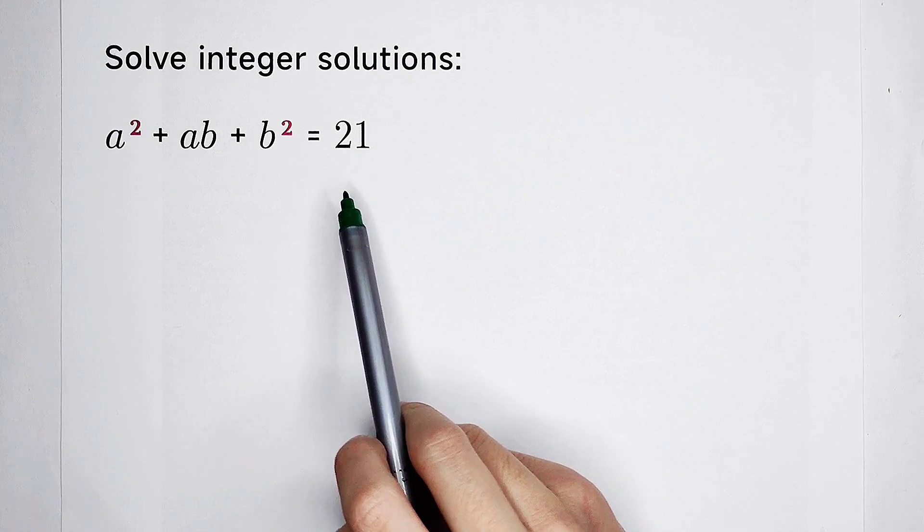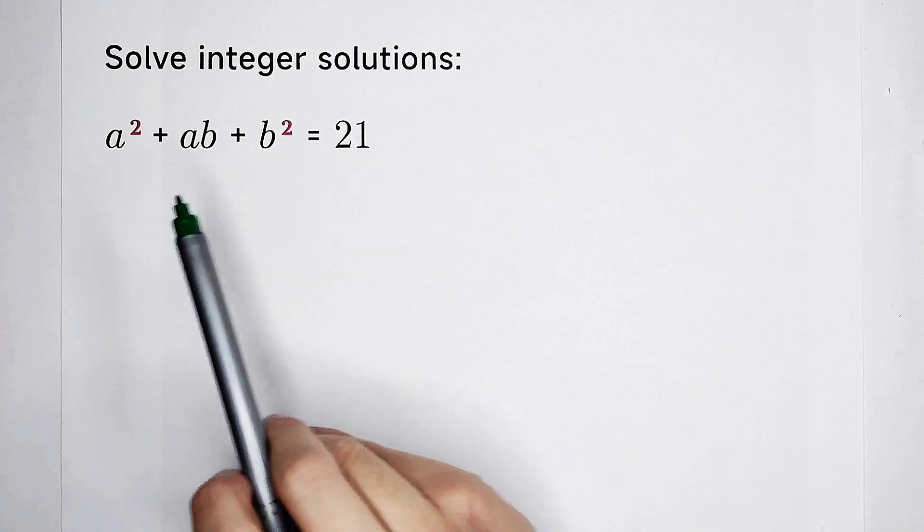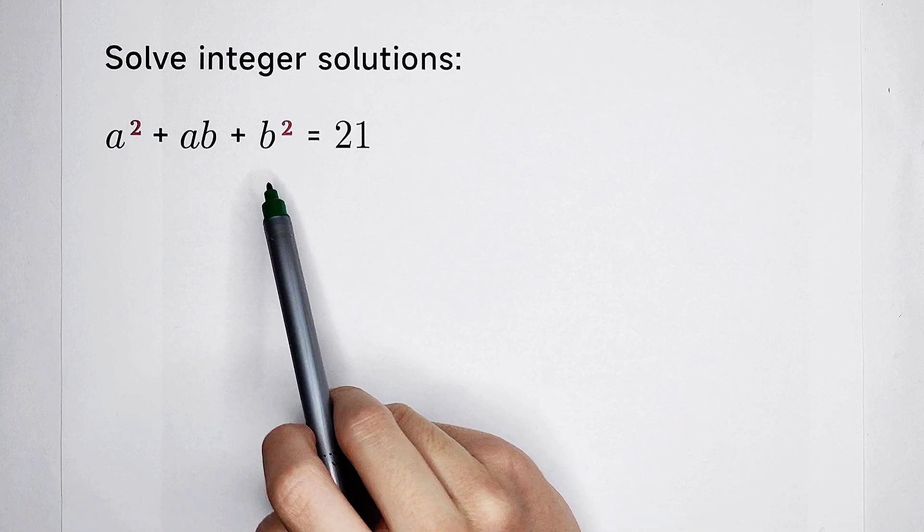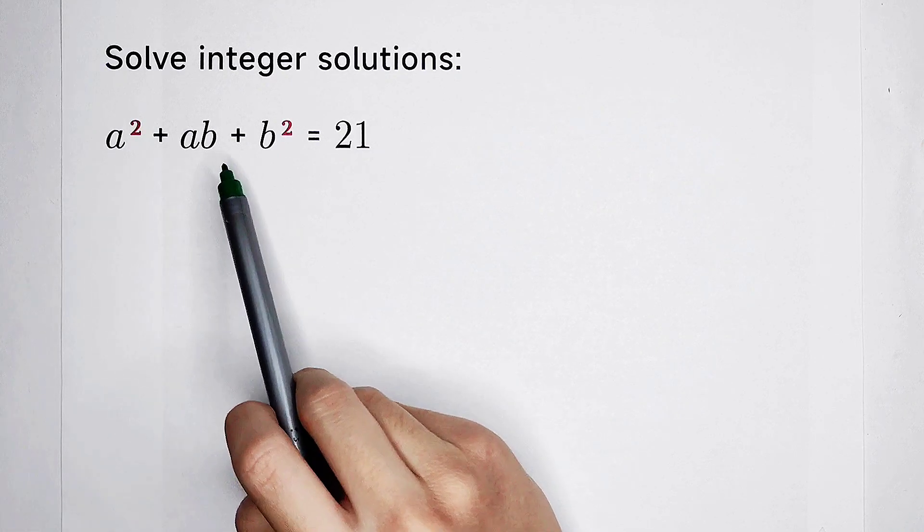So how to solve it? Quadratic equation about a and b. Usually, a squared, b squared, and the coefficient of ab should be 2.